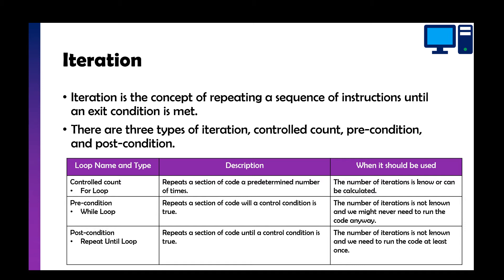You've then got your precondition loop, which is usually a while loop, and this repeats a section of code until a condition is true — a bit like an if statement, so it could be 'whilst continue equals yes'. This is where we don't know how many times the program is going to loop, and it might even be the case that the code might not ever loop. For example, 'whilst answer is not equal to no' — if you type no it ignores that code, if you type yes it jumps into the loop.